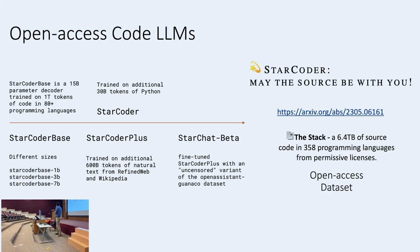The StarCoder base model is available in various sizes, but it can only do code completion — generating the next token. To go from an auto-completing code completion module to something like ChatGPT where you can chat and follow instructions, there's a process. The StarCoder team started with The Stack, a code-only dataset, but mixed it with natural language text — in contrast to OpenAI, who started with text and mixed code in. The key point is: to get a model good at coding, you need a dataset with both natural language and code.